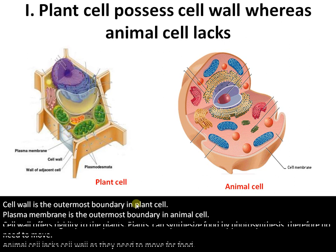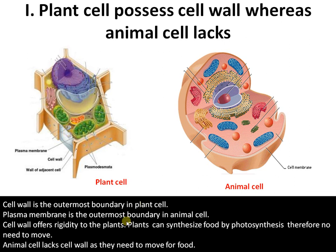Why is this? Cell wall offers rigidity to plants. Plants can synthesize their own food by photosynthesis, therefore there is no need to move. So cell wall rigidity is more important than movement. Whereas in the case of animal cells, they are heterotrophs — they need to move for food. So a cell wall can be a hindrance, and flexibility is the key. So in animal cells, cell wall is absent.